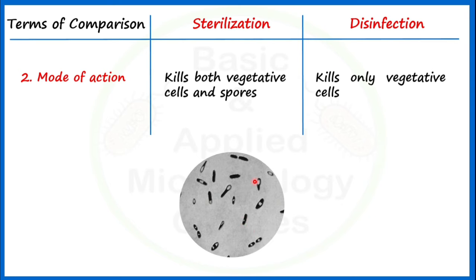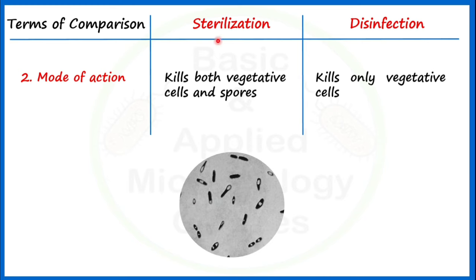Now I am going to show you this picture to explain sterilization. Sterilization kills both vegetative cells and spores — whether the bacteria is present in vegetative cell form or in spore form. All type of microbial forms will be completely removed or killed after sterilization.